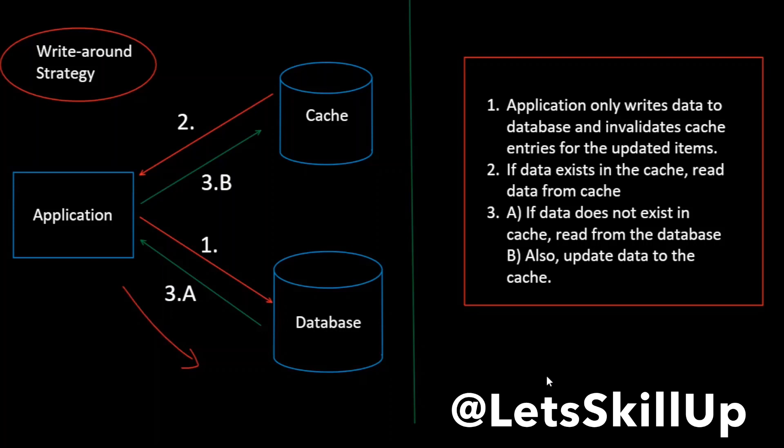Since we have only limited space in the cache we can keep only a subset of data, so we need some mechanism to evict data from the cache. There are different strategies for that such as least recently used (LRU), first in first out, and first in last out. Let me know if you want a detailed video on cache eviction strategies.